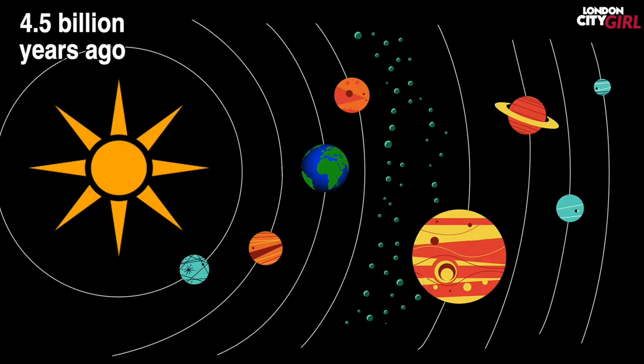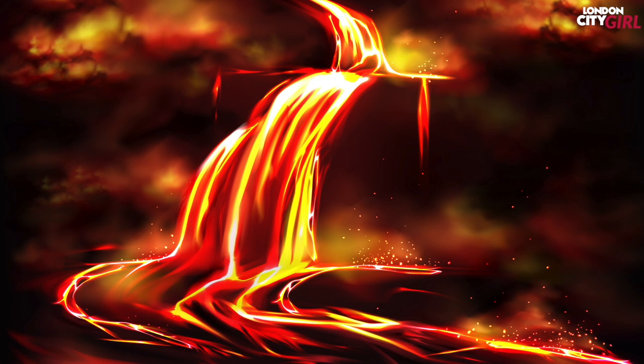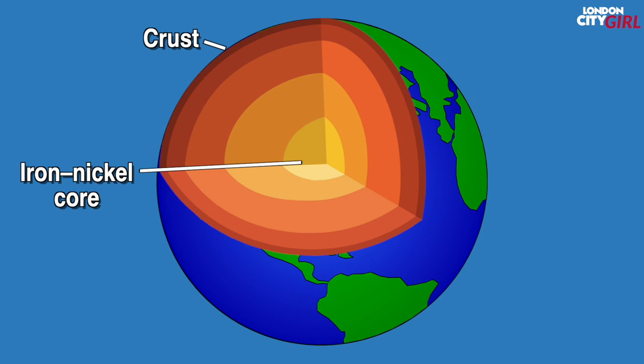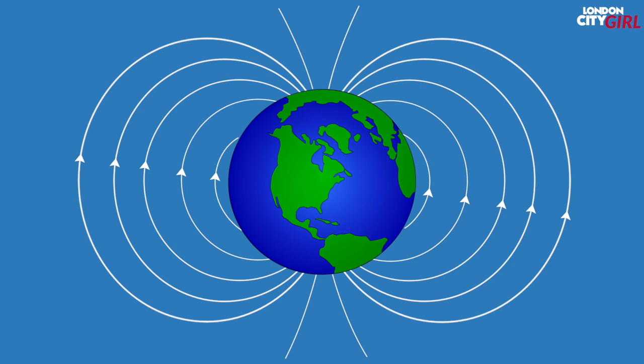4.5 billion years ago our planet Earth emerged as the third planet from the sun. The planet was covered by molten rock and volcanic activity released trapped gas which created the primordial atmosphere. Over time as the Earth cooled lighter material rose to the surface and solidified to form the Earth's outer crust. Heavier materials sank towards the center to create an iron nickel core.